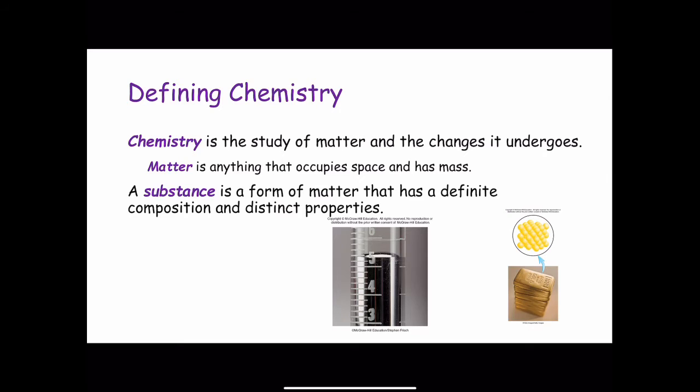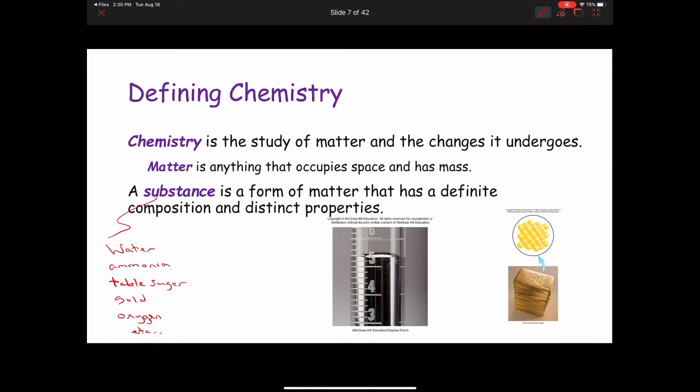A substance is a form of matter that has a definite or constant composition and distinct properties. Examples are water, ammonia, table sugar, gold, oxygen, and many others. Substances differ from one another in composition and can be identified by their appearance, smell, taste, and other properties.